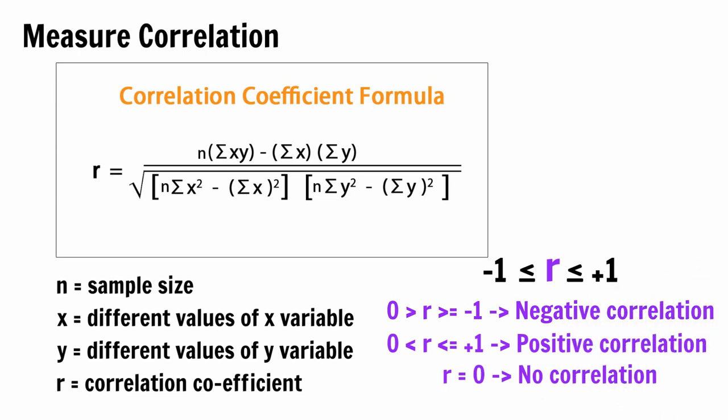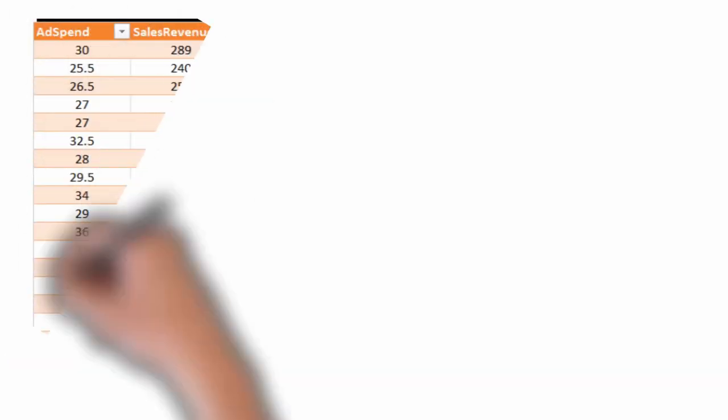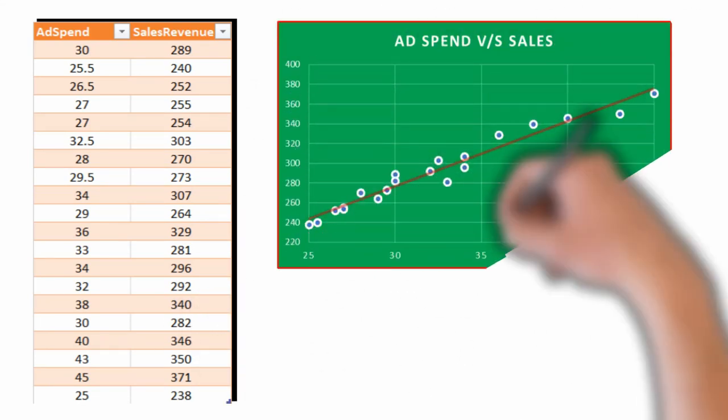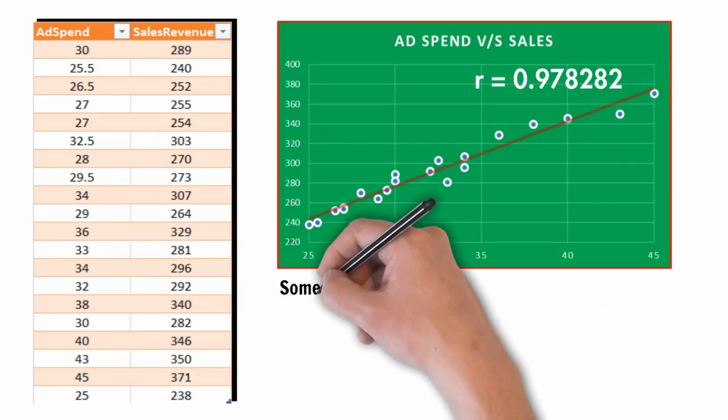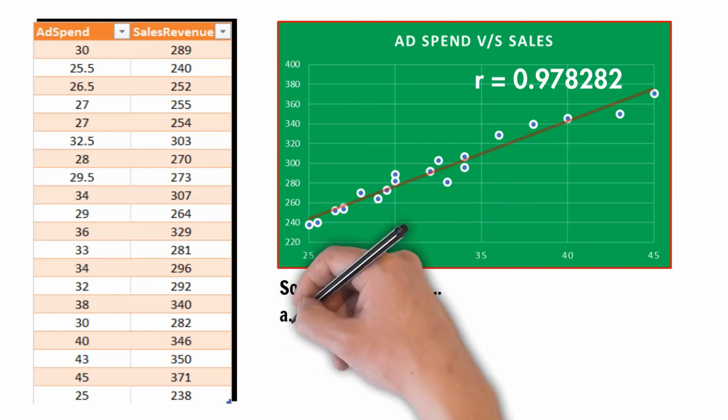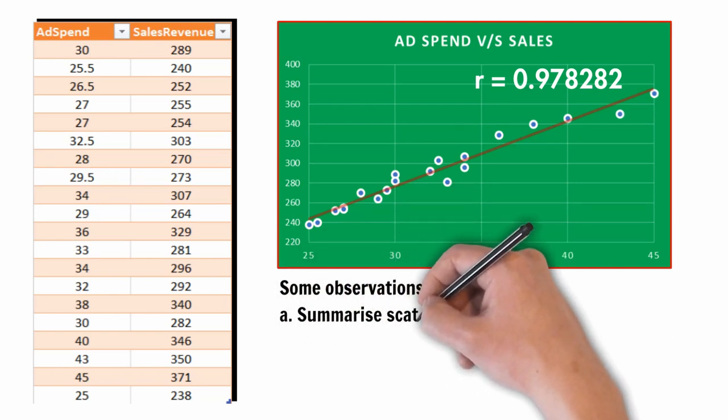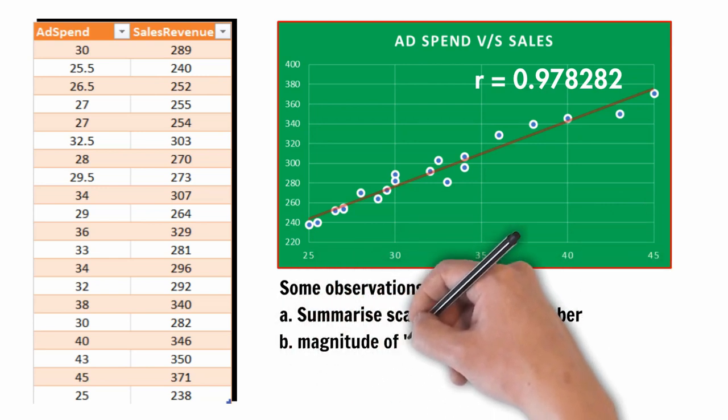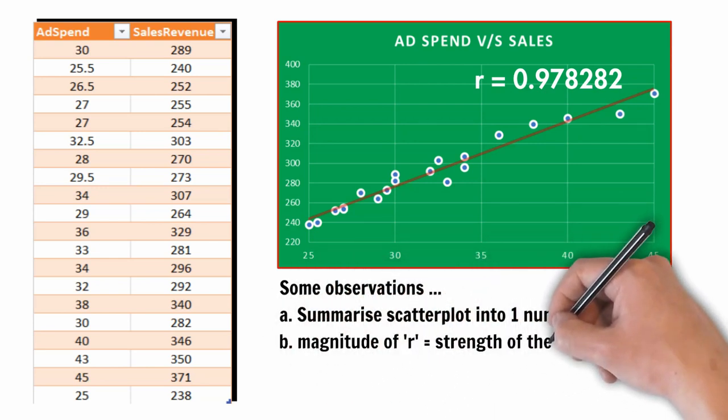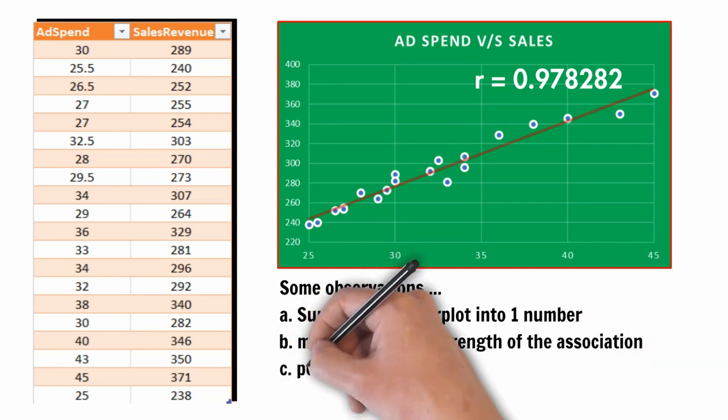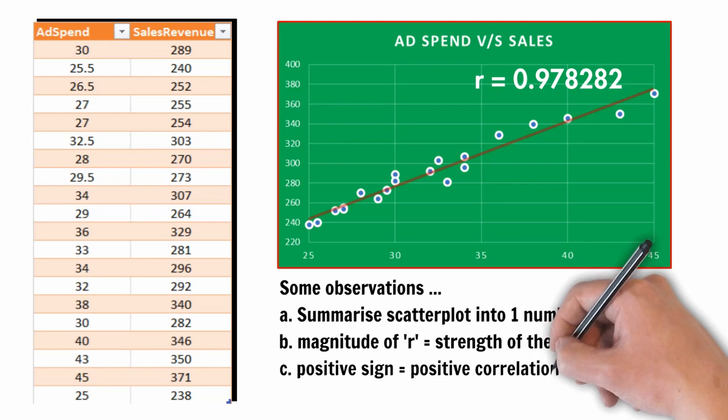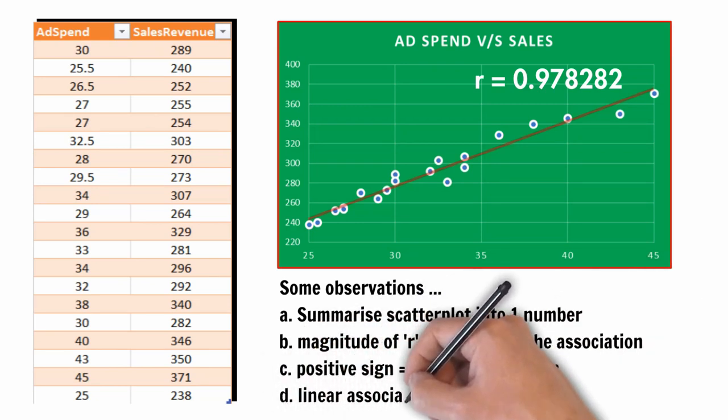Let's move to our example data on advertising spend versus the sales revenue obtained. The data is plotted in a scatter plot like so. Post running the correlation metric we make the following observations. First, the entire scatter plot can be summarized into a single number, that is 0.978. Second, the magnitude of r states the strength of the correlation. Third, the positive sign of the metric points to a positive correlation. Fourth, and finally, we also observe some linear association.